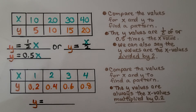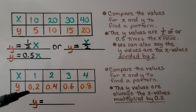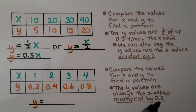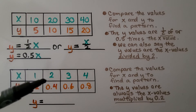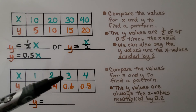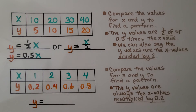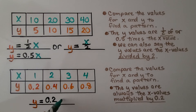For this table, we compare x and y values and find a pattern. We have whole numbers for x and tenths for y, so the y values are less. The y values are always the x values multiplied by 0.2. If we multiply 0.2 times 2, we get 0.4. Times 3 gives 0.6, and times 4 gives 0.8. So y is equal to 0.2 times x — and we've written an equation from the table.